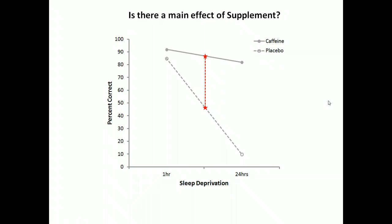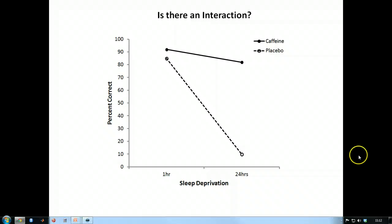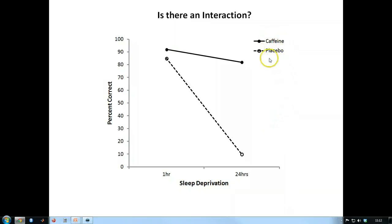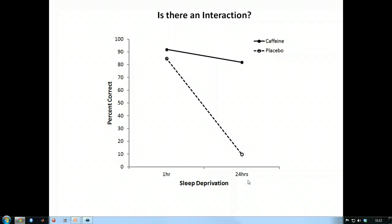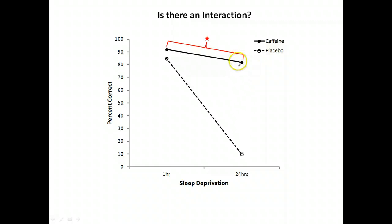Now we've examined whether there's a main effect of sleep deprivation and a main effect of type of supplement. Next we want to know whether these two factors interact. What this is asking is whether one factor affects performance in the other factor — that is, do the levels of one factor alter performance across the levels of the other factor? Interactions are really just an examination of a difference of differences. For the caffeine group, we see a difference between the one-hour level and the 24-hour level of sleep deprivation, and this difference is relatively small — about 10%.